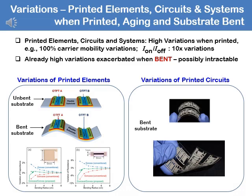In terms of digital design, the on-current divided by the off-current ratio — the typical variations are more than 10x. Of course, some very specialized processors would have lower variations. The variations are really very high when you print, and then when it bends, it gets much worse.